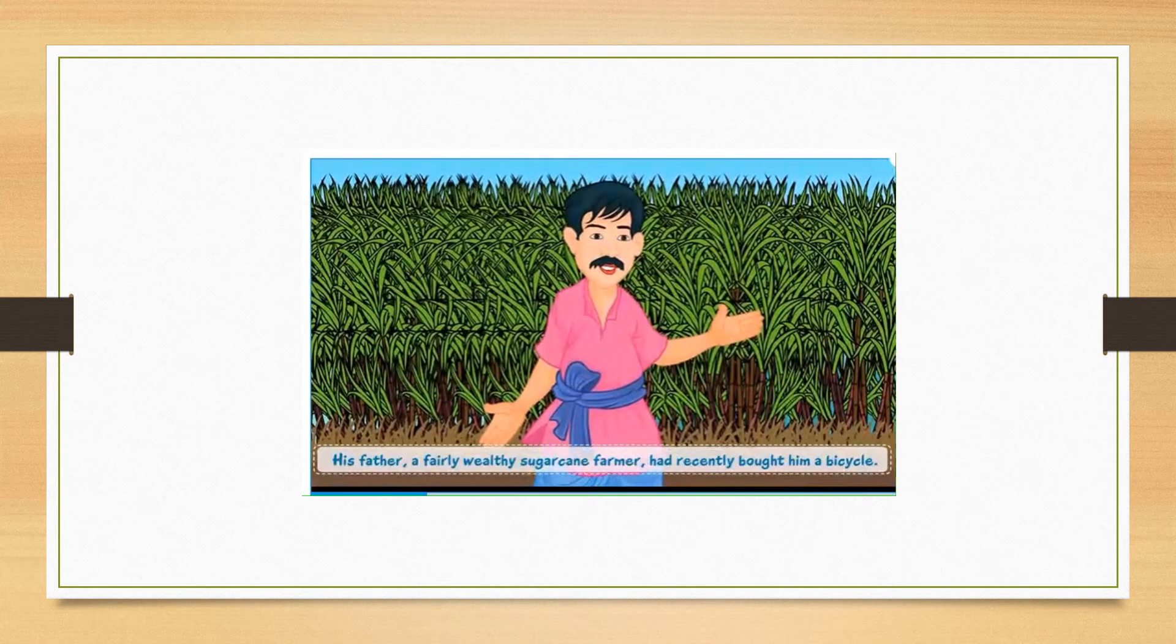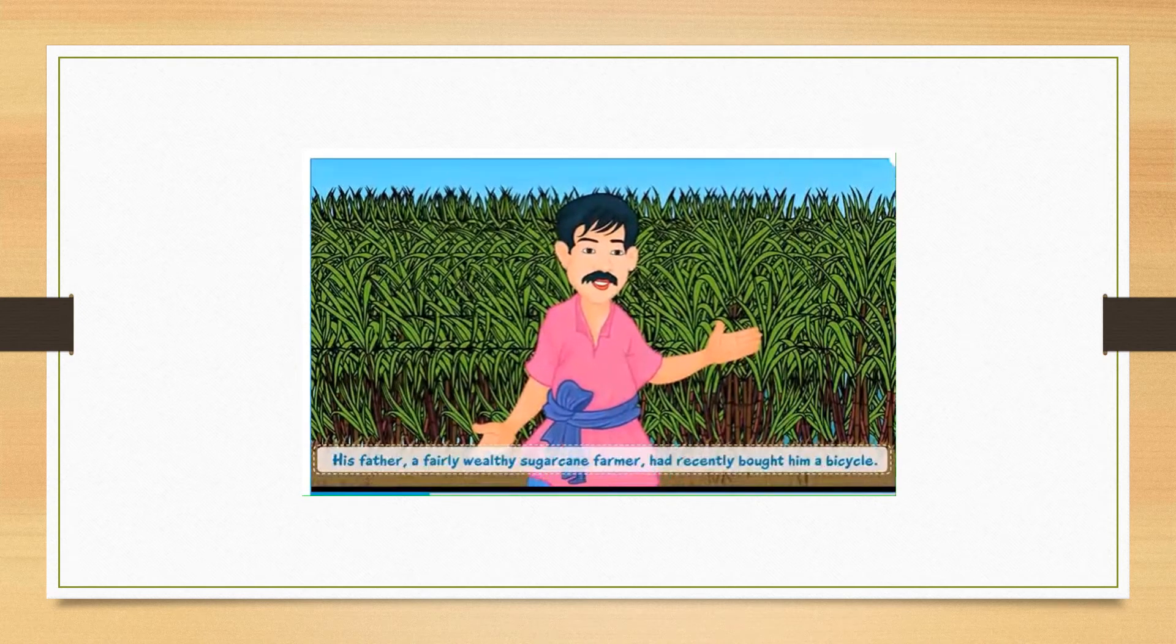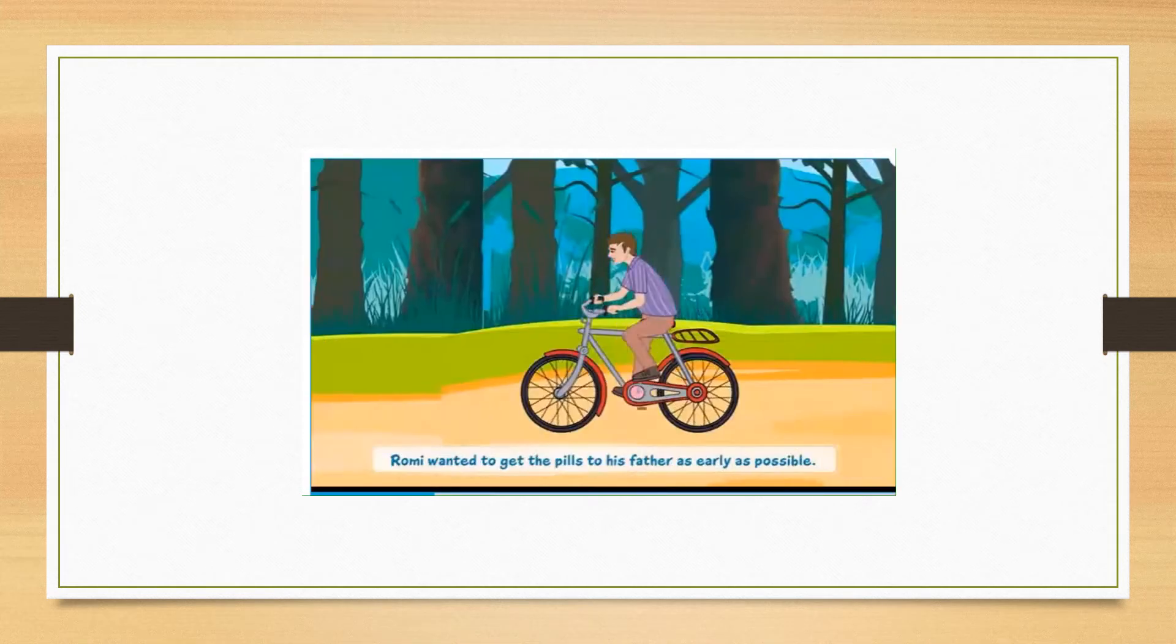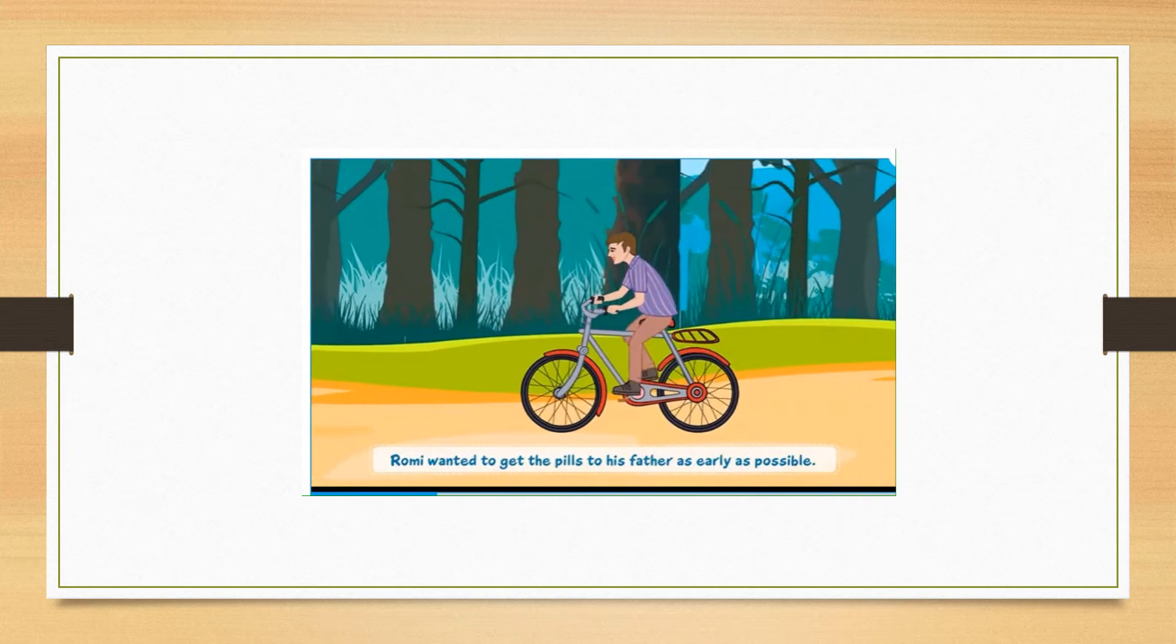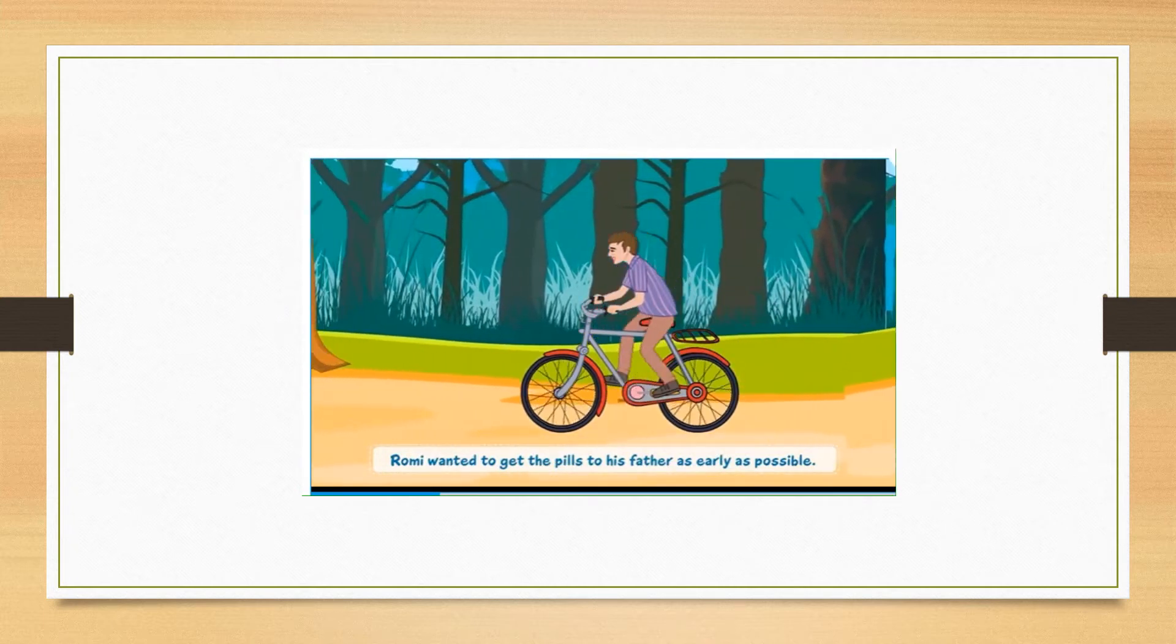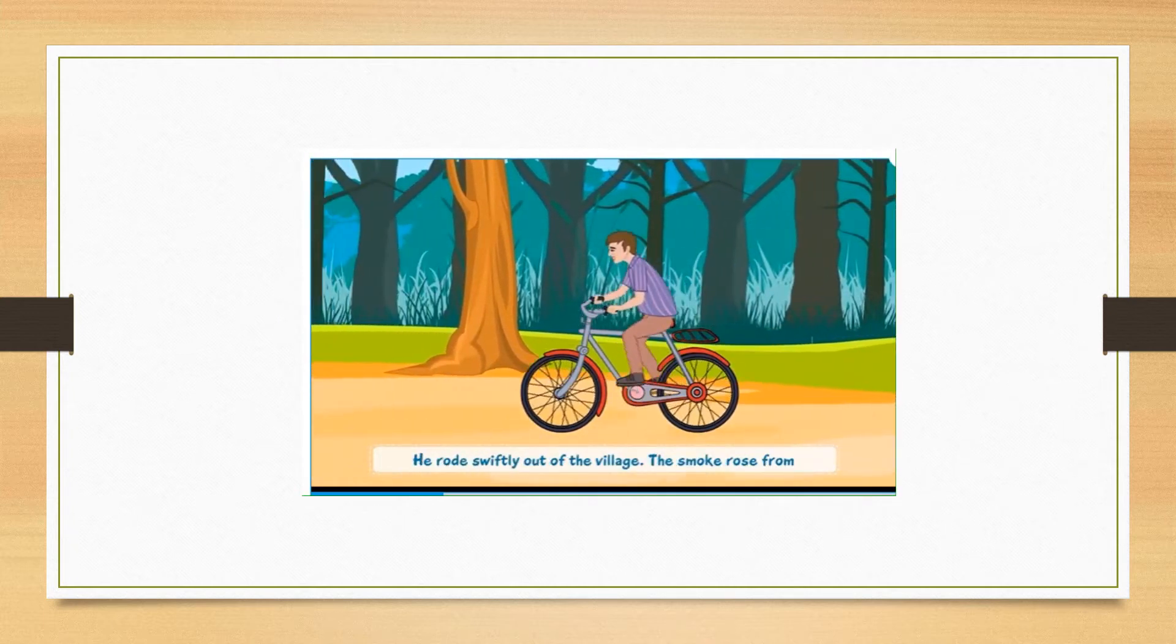His father, a fairly wealthy sugarcane farmer, had recently bought him a bicycle. Romy wanted to get the pills to his father as early as possible. He rode swiftly out of the village.